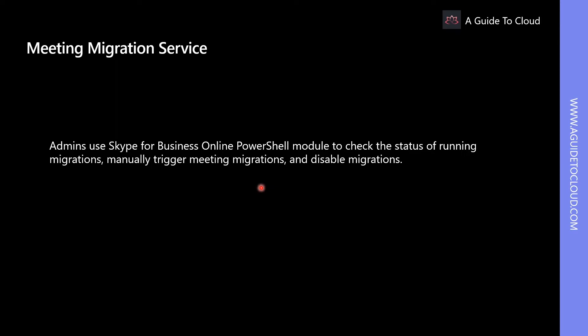When the Meeting Migration Service has been triggered for a user, a migration request for that user is placed in a queue. Once MMS processes this request, it performs the following tasks: it searches the user's mailbox for all existing and future meetings organized by that user; it updates or schedules new meetings in either Teams or Skype for Business Online; in the email message, it replaces the online meeting block in the meeting detail; and it sends the updated version of that meeting to all meeting recipients on behalf of the meeting organizer. Please note that if an error occurs during the migration process, the MMS will periodically retry up to nine times during 24 hours.